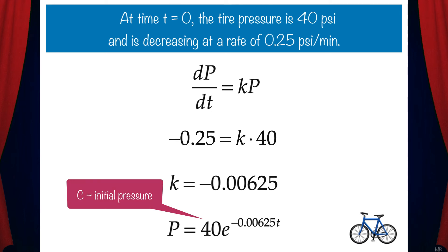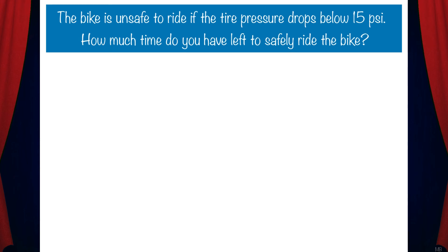Now let's solve the next question. The bike is unsafe to ride if the tire pressure drops below 15 psi. How much time do you have left to safely ride the bike? So what we need to do is set 15 equal to 40e to the negative 0.00625t and solve for t.